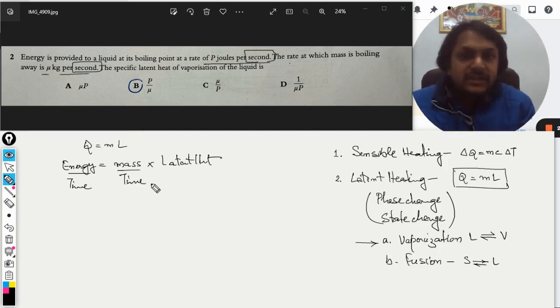Obviously latent heat cannot be divided by time, that doesn't make any sense. Mass divided by time will be the rate of vaporization of mass, and energy per time is the power that is being spent there. That power is given as P.